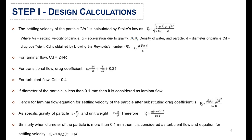For laminar flow, the settling velocity equation is modified after substituting the drag coefficient, specific gravity of the particle, and unit weight equations. Similarly, when the diameter of the particle is more than 0.1 mm, it is considered turbulent flow and the settling velocity is calculated by the corresponding equation.